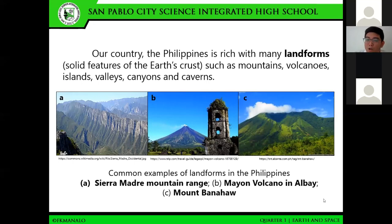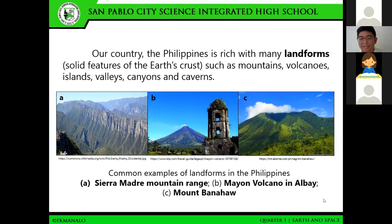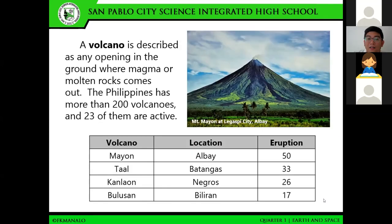What do you think is the role of these landforms in our environment or community? Yes, Maika? Aside from being tourist destinations, landforms also provide us our basic needs such as food and shelter. They also protect us from different catastrophes like typhoons and other environmental hazards.